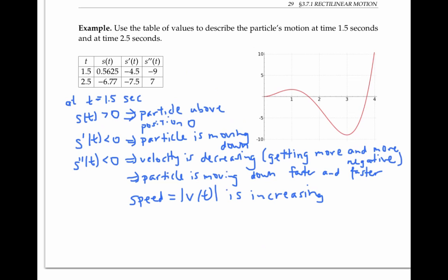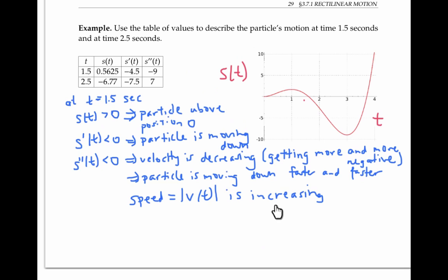We can also see what the particle is doing at 1.5 seconds by looking at the graph where time is on the x-axis and position s(t) is on the y-axis. From the graph, we can see that when t is zero, s(t) is also zero, so the particle starts at its baseline position. At 1.5 seconds, the particle is above this starting position but moving downwards. Since the slope of this graph is getting steeper and steeper, we can conclude that the speed of the particle is increasing — the same conclusion we reached from the table of values.